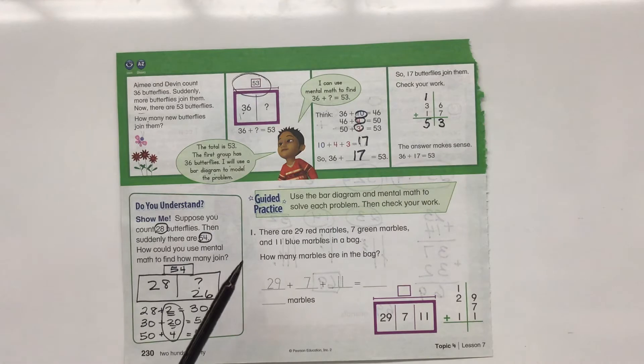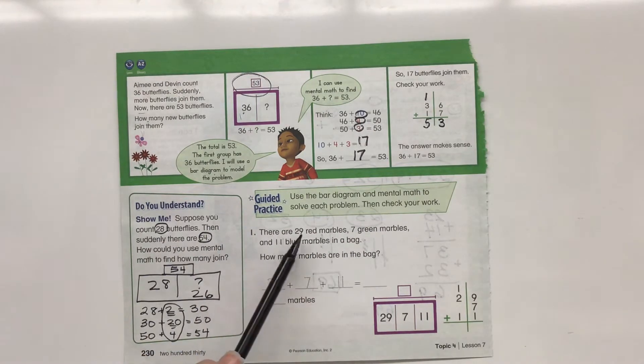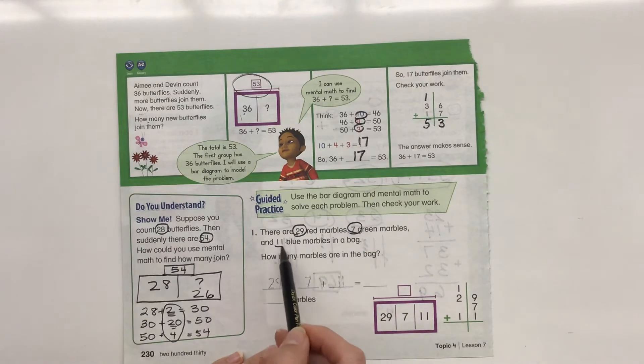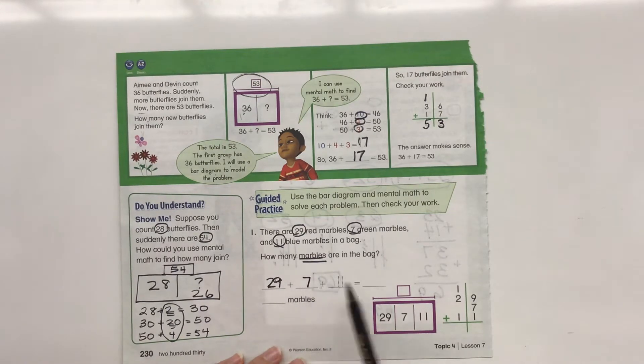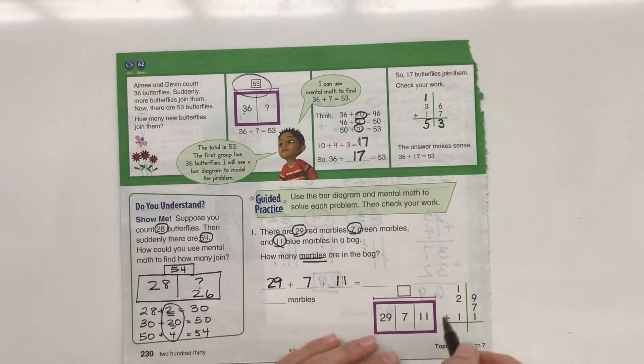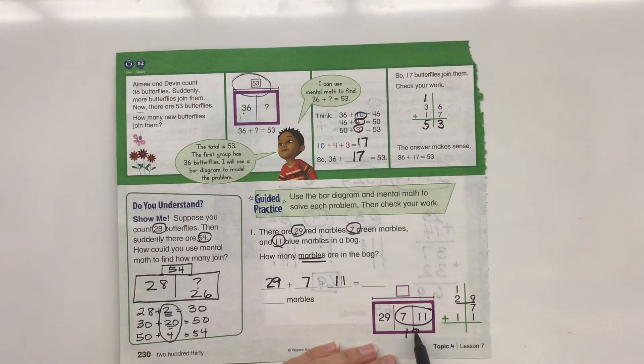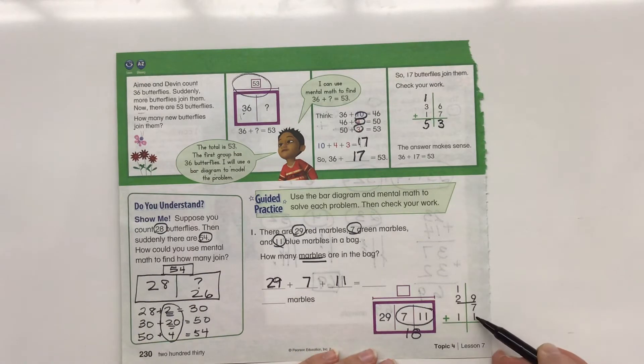Let's take a look at our guided practice. Use the bar diagram and mental math to solve each problem, then check your work. There are 29 red marbles, 7 green marbles, and 11 blue marbles in a bag. How many marbles are in the bag? So we know we have 29 red marbles plus 7 green marbles plus 11 marbles in the bag. I know that 11 plus 7 is 18 and 29. So let's go ahead and add it together here. 9 plus 7 is 16 plus one more is 17. So 7 in the ones place.